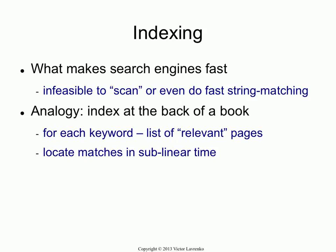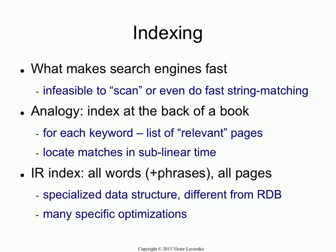An inverted index that a search engine uses is very much the same type of data structure, with one big difference: you don't choose which phrases and words you index. You basically index everything — you pick all the words and phrases, and you store pointers to all the pages that contain a mention of those words and phrases.